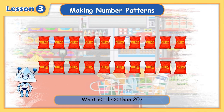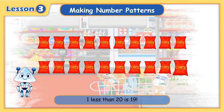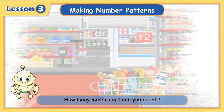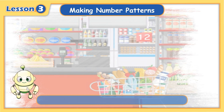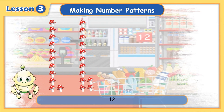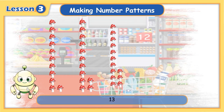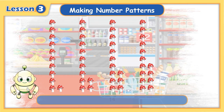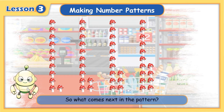One less than 20 is 19. How many mushrooms can you count? 11, 12, 13, 14. So what comes next in the pattern?